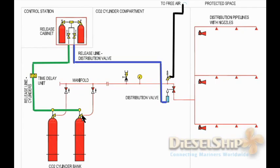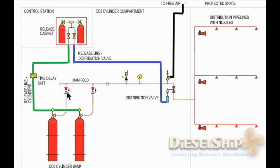As the chief engineer opens the main distribution valve, it has a limit switch which gives an indication that the main distribution valve is opened. After the time delay, the main CO2 bottles corresponding to the engine room are also opened. The CO2 passes through the non-return valve — remember each cylinder outlet has a non-return valve. The CO2 released then reaches the main manifold and through the distribution valve it goes to the engine room, distributed to various nozzles across the platforms.